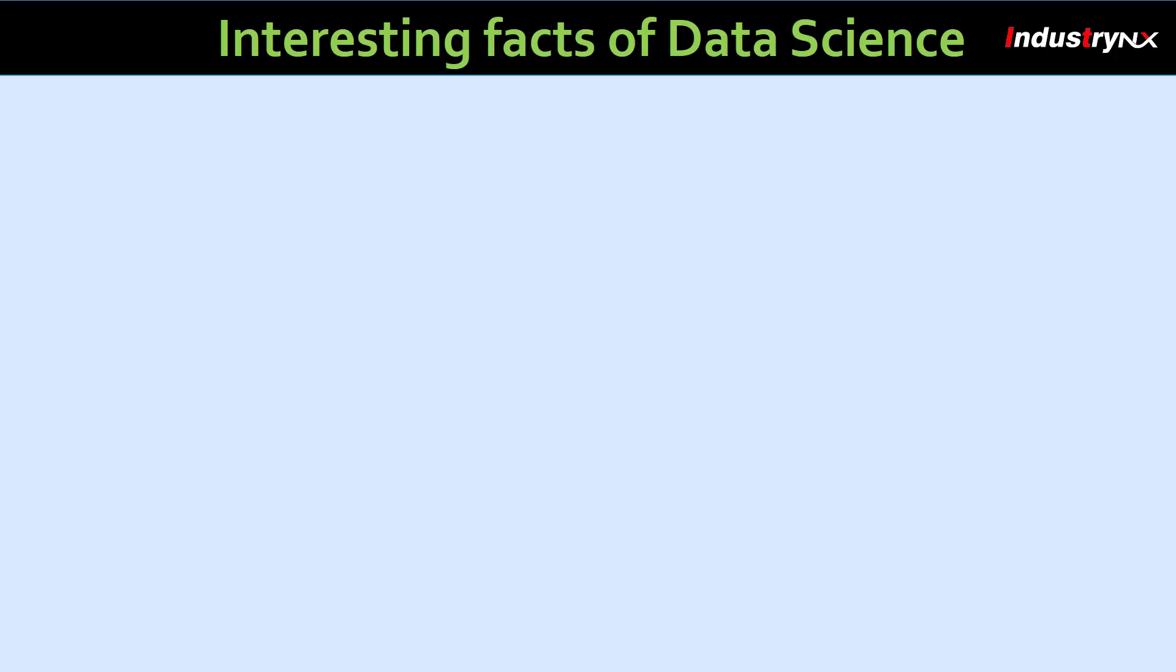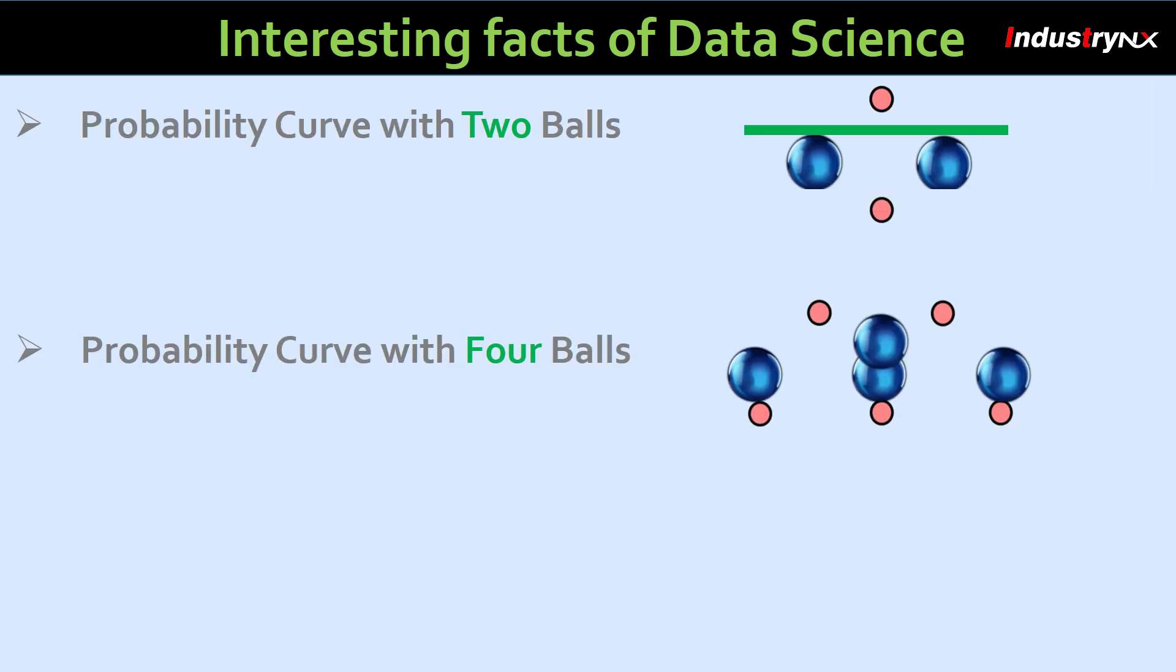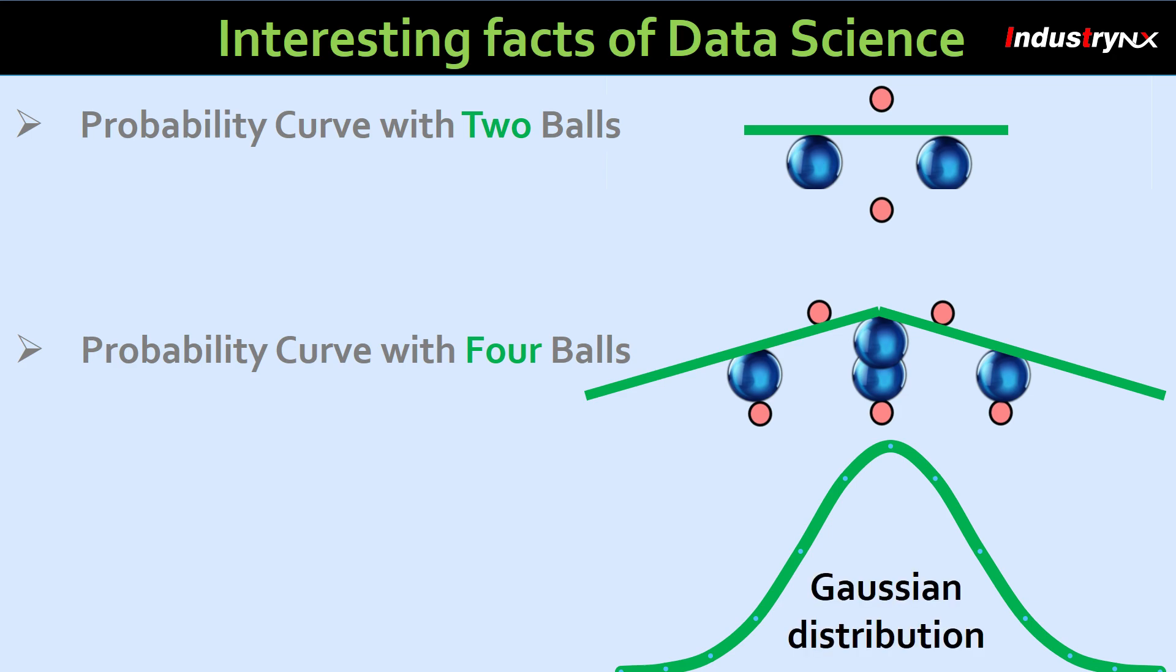Here is interesting stuff now. To understand data science, with 2 balls, we found a straight line and with 4 balls, a pyramid-shaped graph. But normal distribution graph should be bell-shaped curve as per Gaussian distribution curve theory. Yes, theory is correct, but we need to have more data for the experiments.